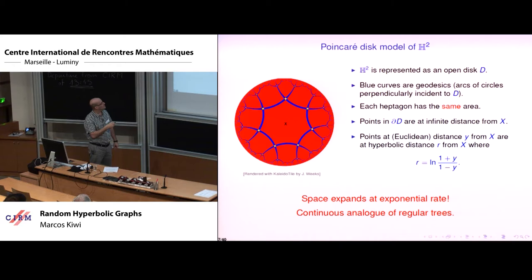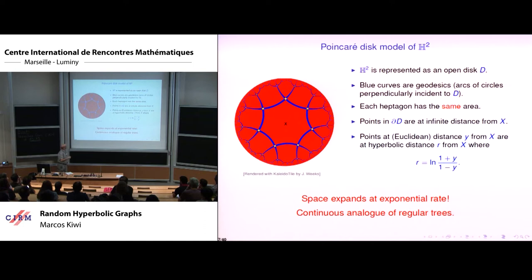The most remarkable thing about the Poincaré disk drawing is that all those regions are heptagons of the same size. You can tile hyperbolic space with heptagons — you cannot do that in Euclidean space. This illustrates the main feature of hyperbolic space: it expands very fast. Move a little bit out and the area increases not polynomially but exponentially. The boundary represents points at infinity — the distance to the boundary is infinite.